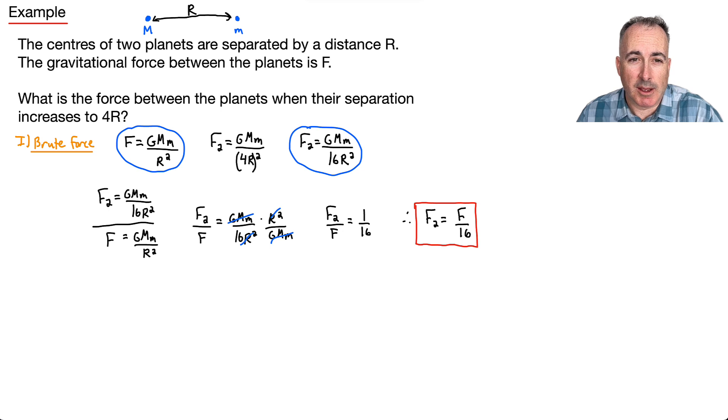That was the brute force way, but there's actually a quicker way to do it. You just use the fact that these things are proportional. We don't look at all the details, we just look at what's changed. If the masses didn't change and the only thing that changes is the distance between them, then I'm only going to care about the piece that's changed. I'm going to say the force is proportional to 1 over r squared. I don't care about the GMMs since they're the same and they're going to cancel out.